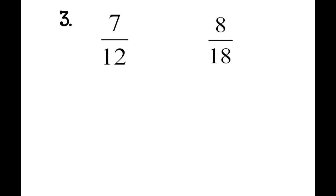So we look at 7/12 and 8/18, and our common denominator would be 36. So to get 12 to 36, we're going to multiply by 3. And to get 18 to 36, we're going to multiply by 2. So this leaves us with 21/36 compared to 16/36.